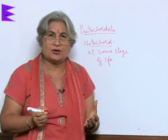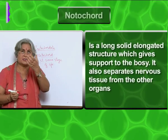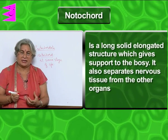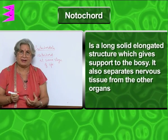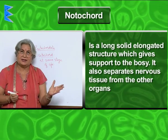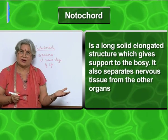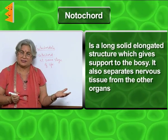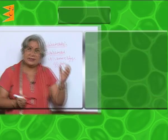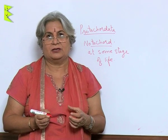Now, what is a notochord? Notochord is a solid, elongated, cylindrical structure and it separates nervous tissue from the other muscles or organs. In the notochord runs the nerve chord.